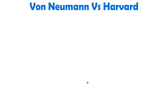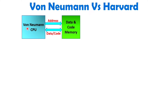When we talk about Von Neumann architecture, here we have the CPU and here we have memory. For data and for code, we have common memory. So when you provide an address from the CPU, that address will be common for data as well as code. When we talk about code — that is the program we are executing — you just need to read code from the memory.